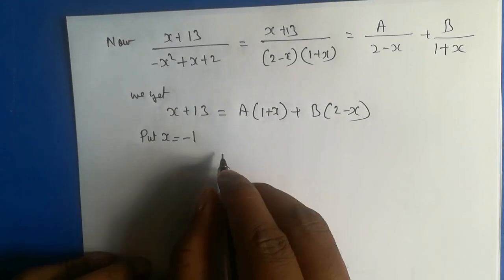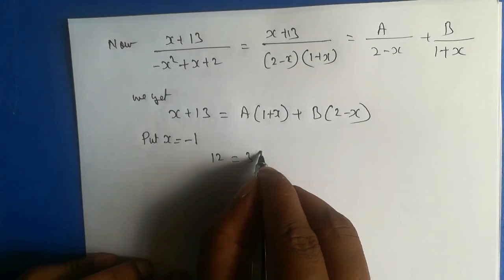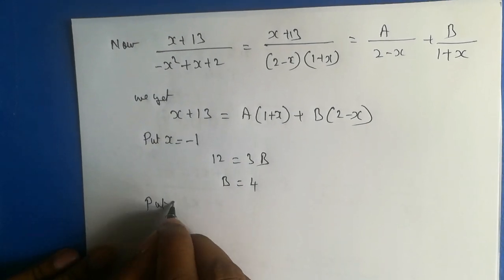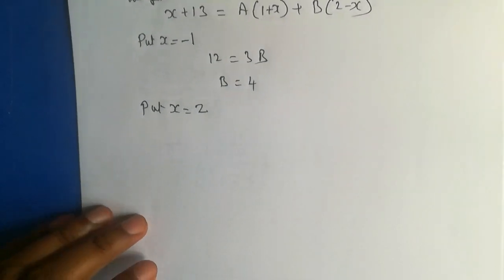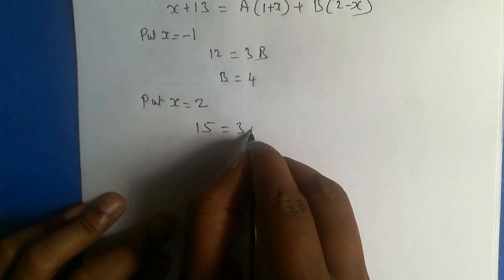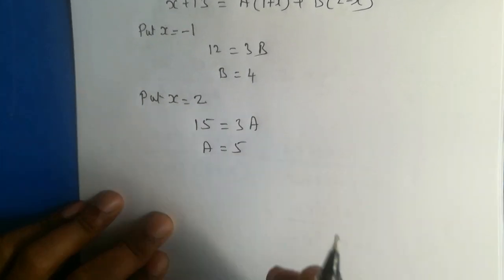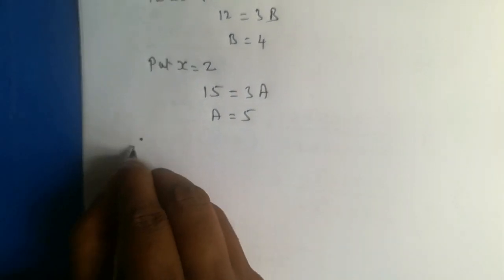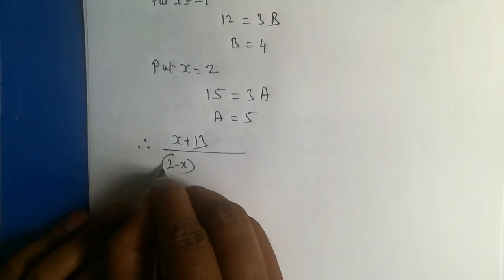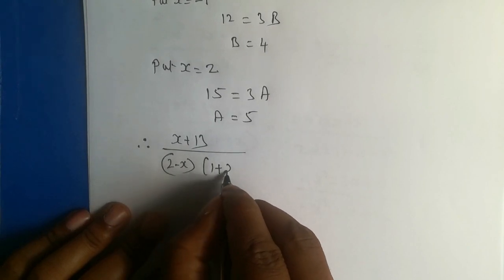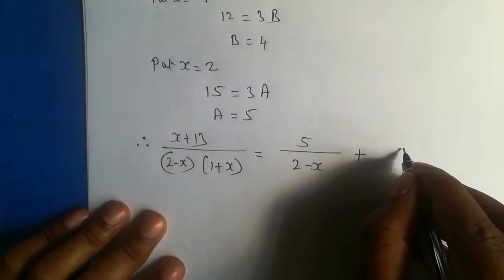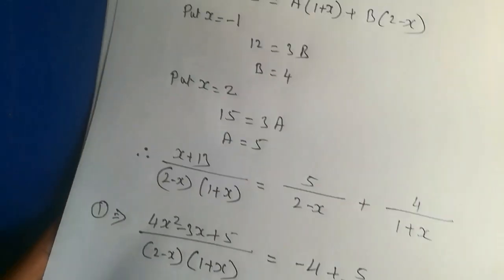Put x equal to minus 1, and find the B value as 4. Put x equal to 2, and A equals 5. Therefore, this proper fraction simplifies accordingly — just I will show this.